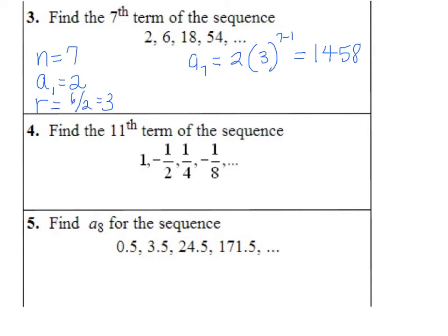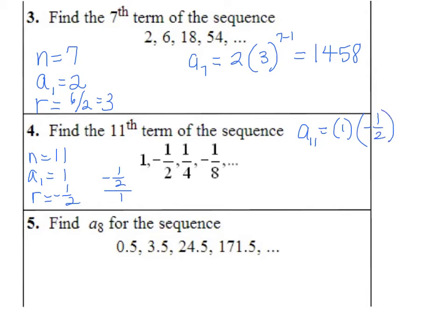For the eleventh term: n equals 11, a sub 1 equals 1, and r equals negative one-half divided by 1, so r is negative one-half. So a sub 11 equals 1 times negative one-half to the tenth power. Negative one-half to an even power is positive, so the answer is 1/1,024.